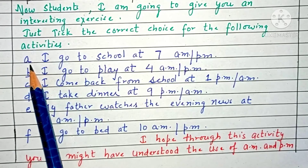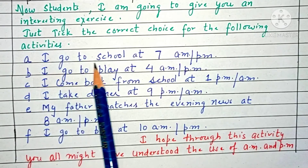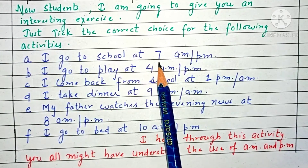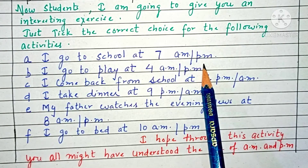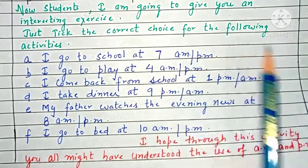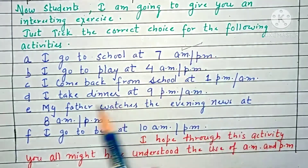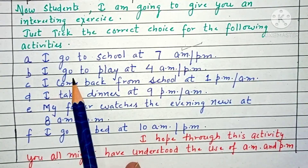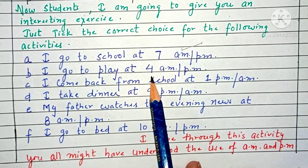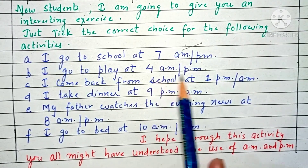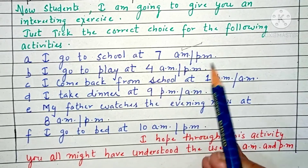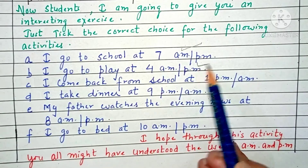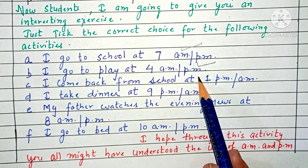Part A: I go to school at 7 AM or PM. The correct choice is 7 AM. Part B: I go to play at 4 AM or 4 PM. The correct choice is 4 PM, as we play in the evening.